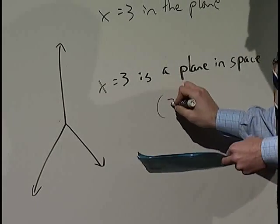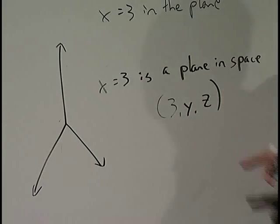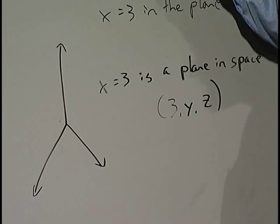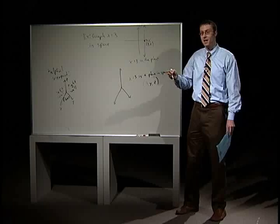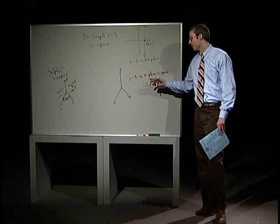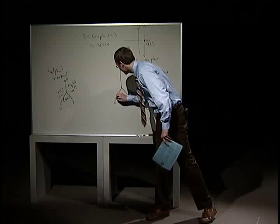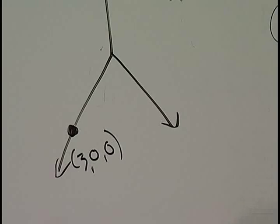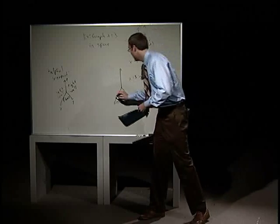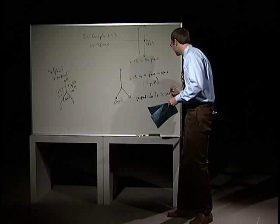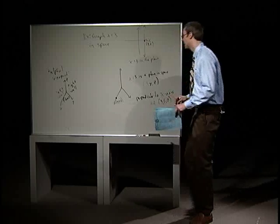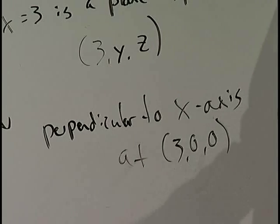So what does this plane contain? It contains all points that look like (3, y, z). Just like this vertical line contained all points of the form (3, y) where we let y range over all real numbers, the same thing happens here — only we're allowing both y and z to range over all real numbers. The plane x equals 3 is going to cut the x-axis at the point (3, 0, 0), and it runs parallel to the y and the z axes.